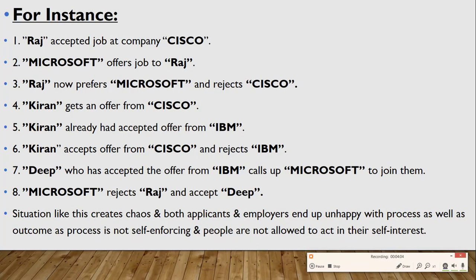As Raj prefers Microsoft over Cisco, he would reject Cisco and prefer Microsoft. Kiran, who now has an offer from Cisco, is already working for IBM, but she accepts Cisco as she prefers it over IBM. Deep, who is now working for IBM, calls Microsoft and asks if he can join them. Microsoft prefers Deep over Raj, so it accepts Deep and rejects Raj.